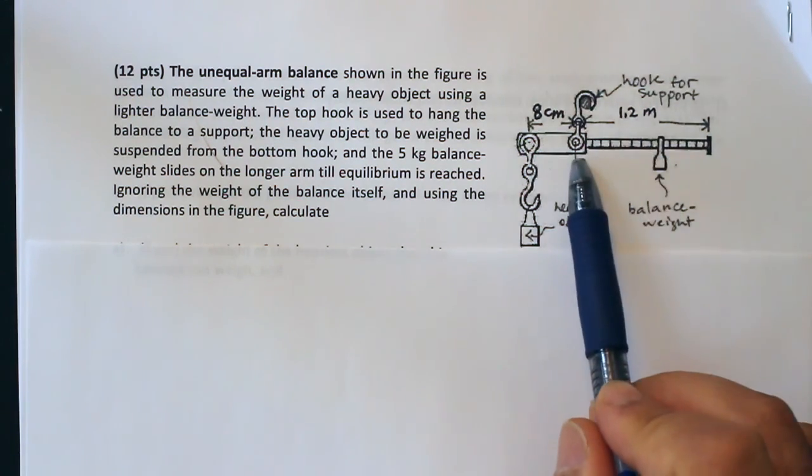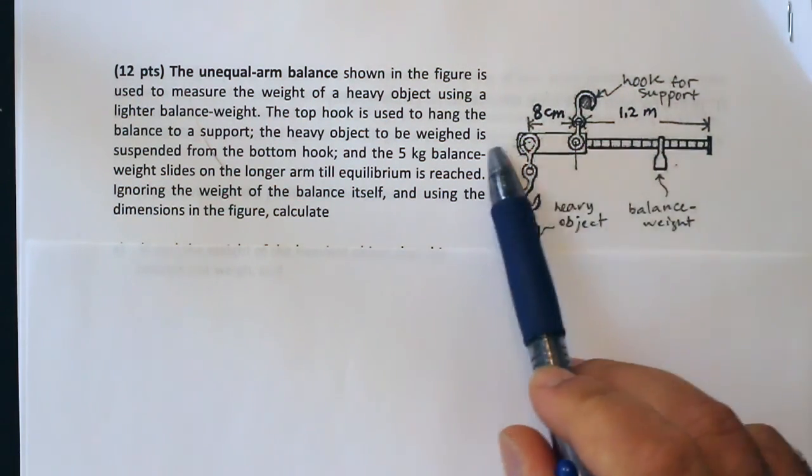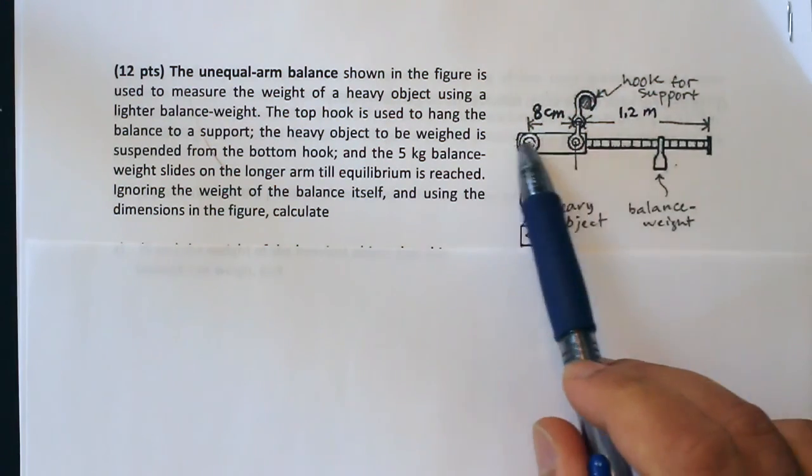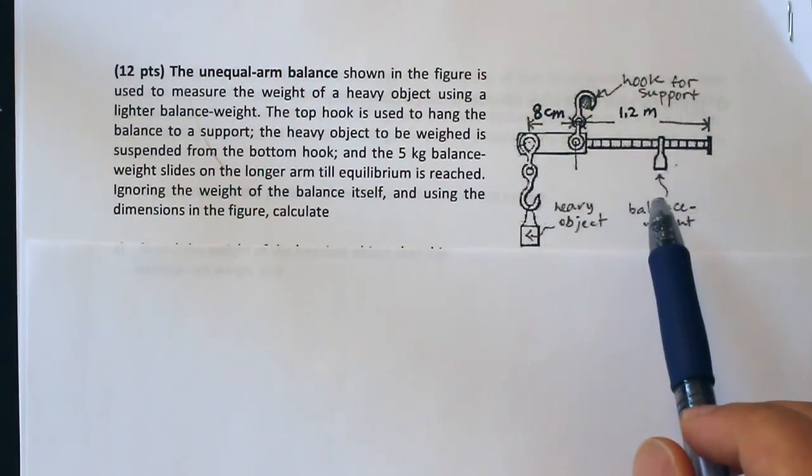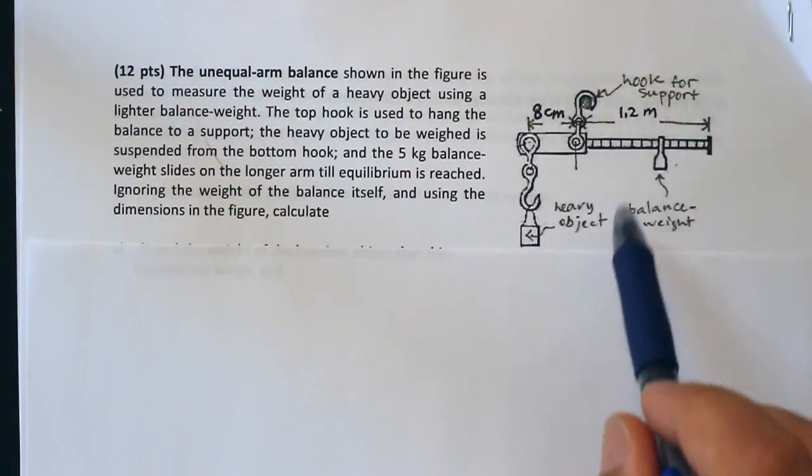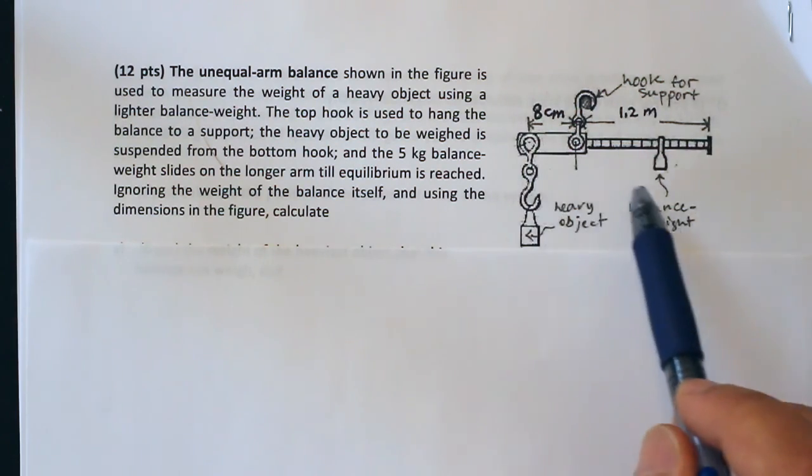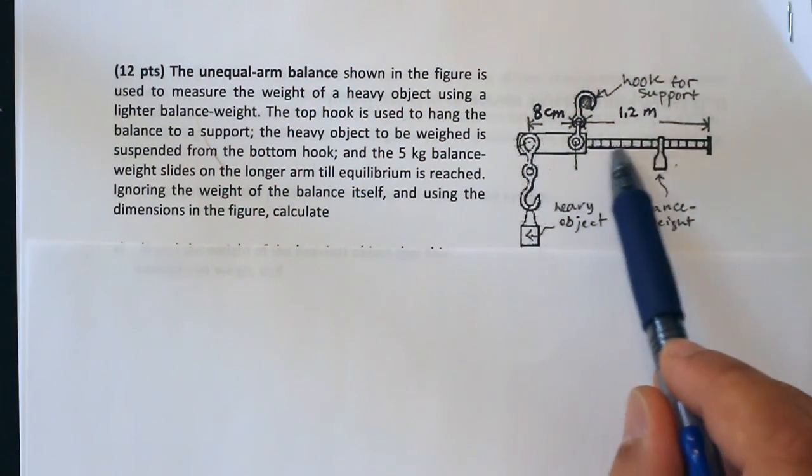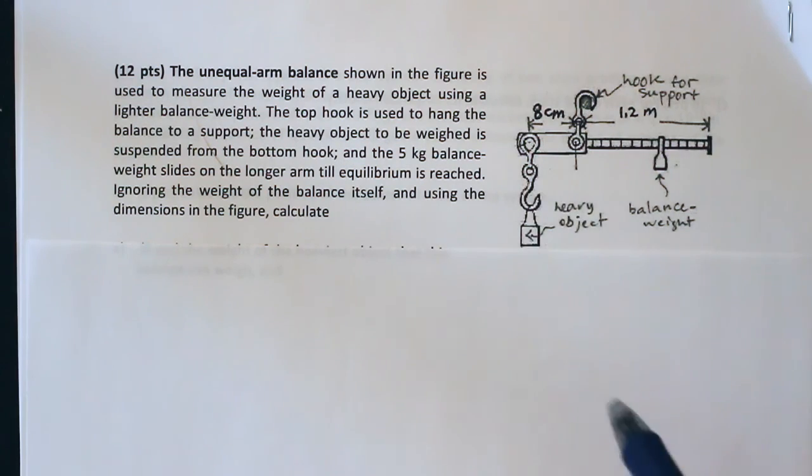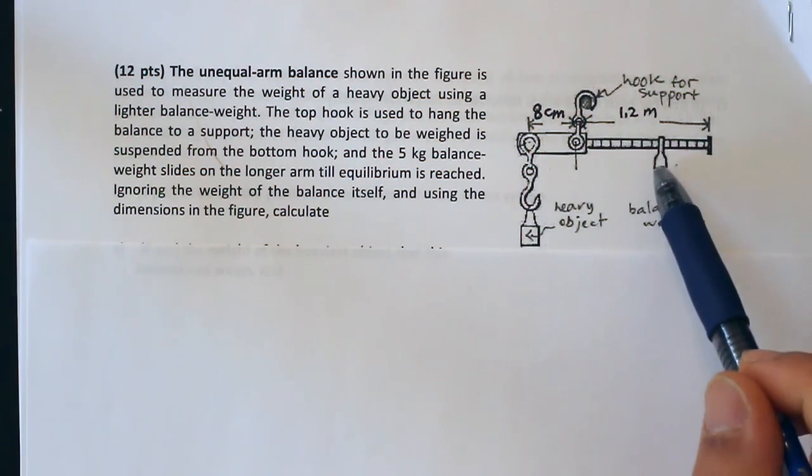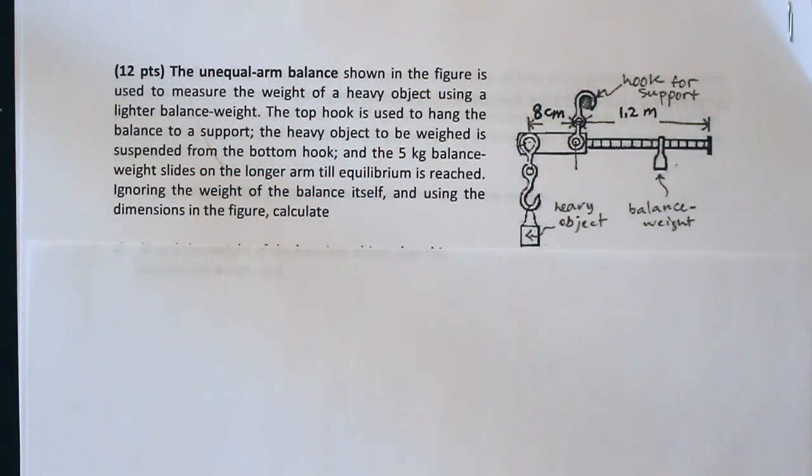And then you move this balance weight until this system is balanced. The two arms are balanced, and then knowing the torques that these two things generate, you can calculate based on the arm length how heavy this object is, knowing the balance weight that is given.